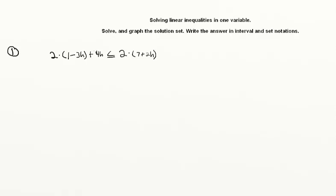In this video we will be discussing linear inequalities in one variable. We'll be asked to graph the solution set, and first we have to solve it, then graph it on a number line, and finally write it in set notation. What we're going to do is solve for h, our variable, as if it were an equality. However, we have to remember that if you invert two sides of an inequality the sign changes, and if you multiply two sides by a negative value, you also flip the sign of the inequality.